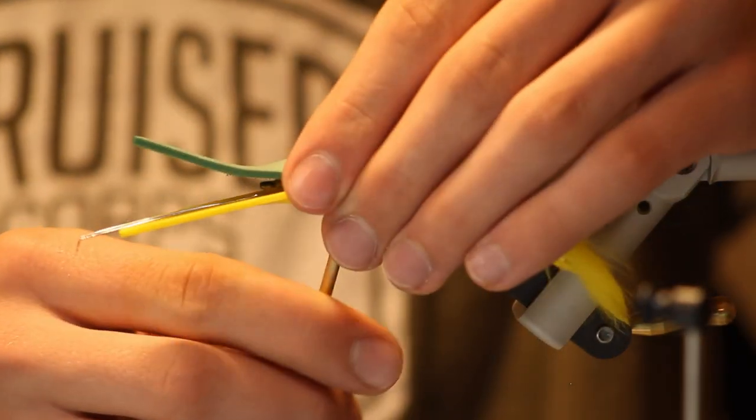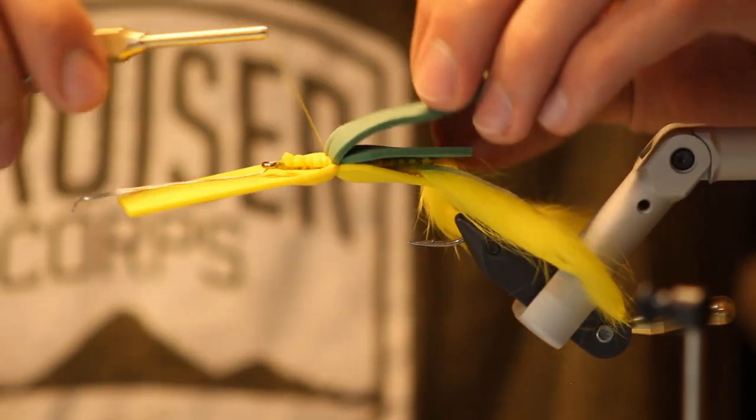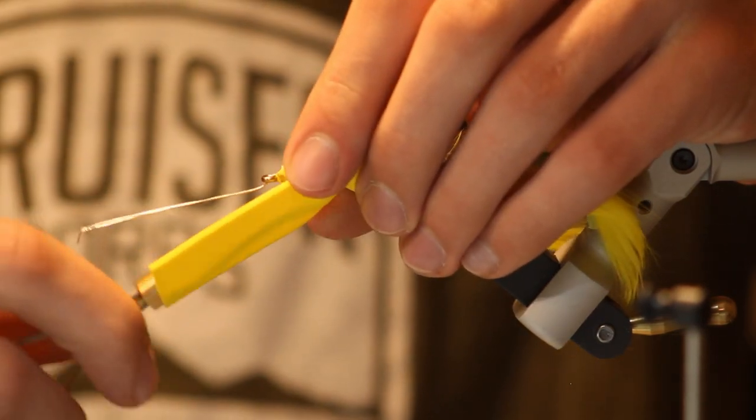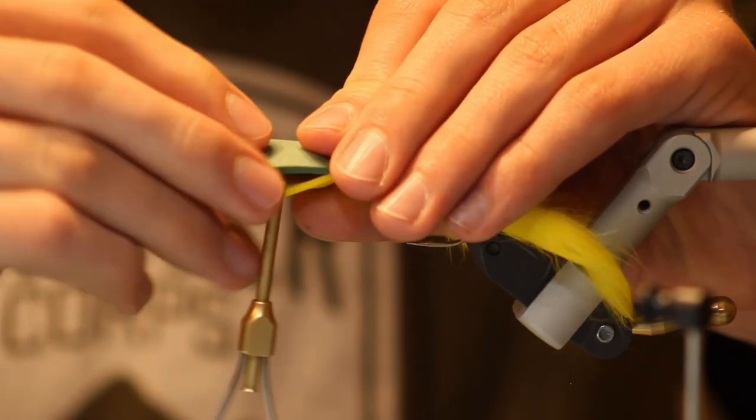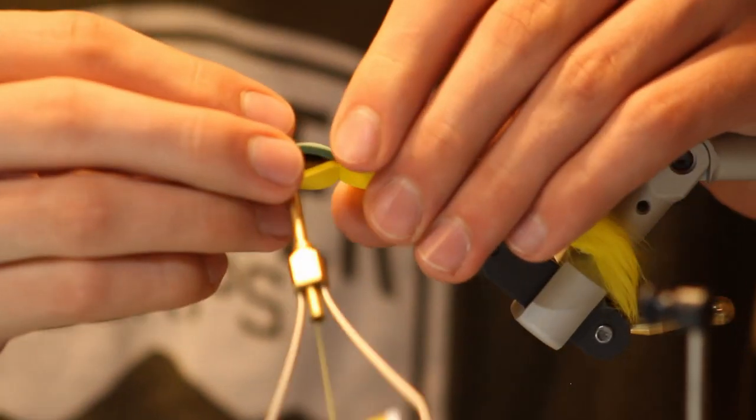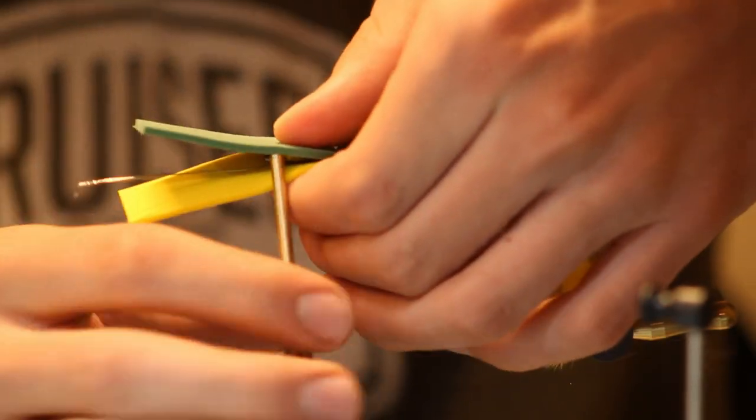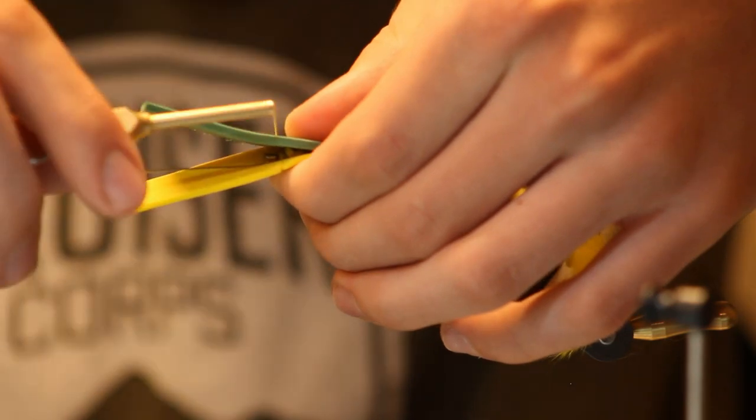So you can tighten it down pretty good right here. So now I'm just going to lift this up against my thread right behind the eye. Now I'm going to take this foam here and make some wraps.